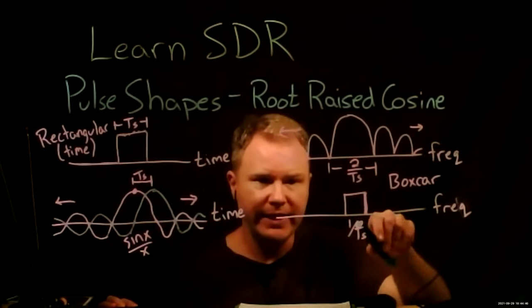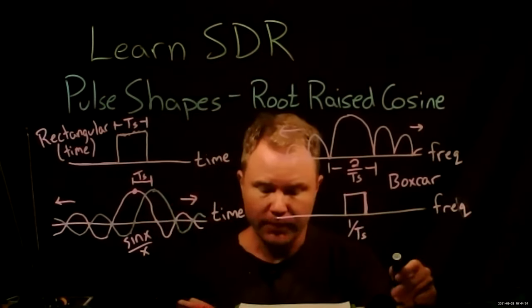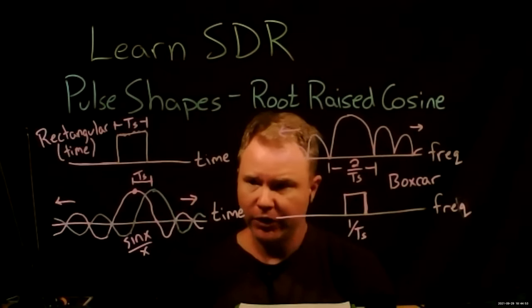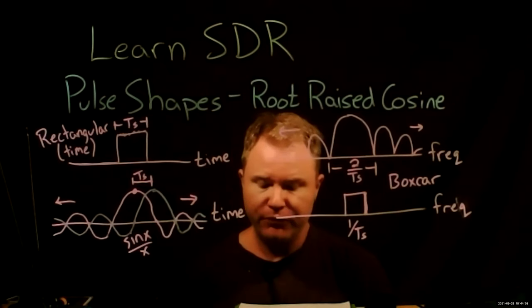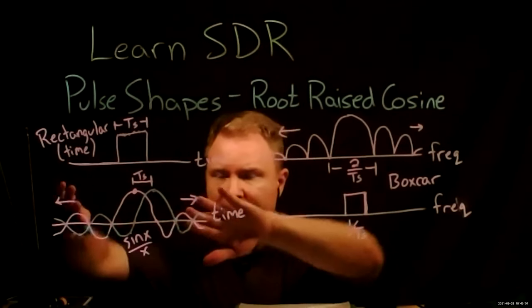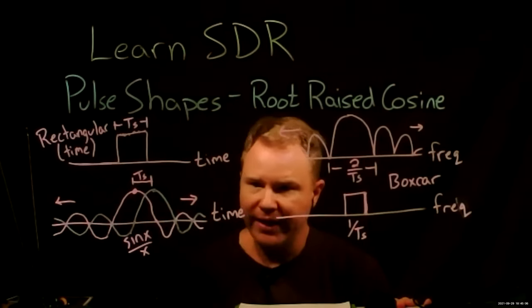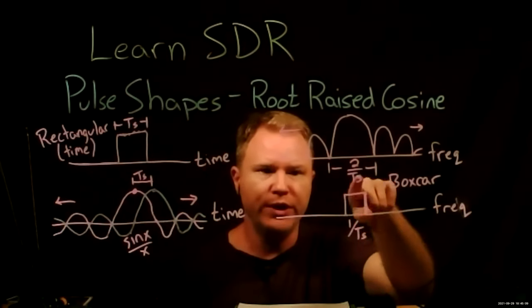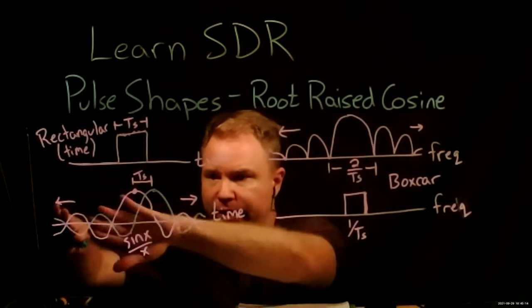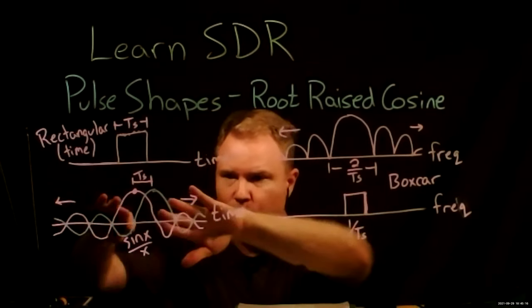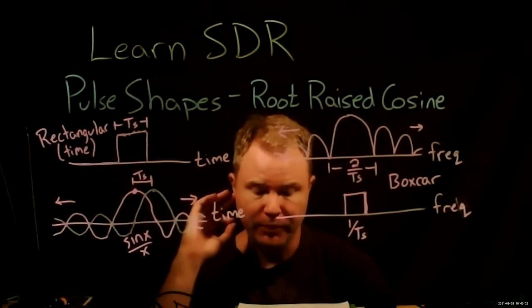This is theoretically possible — fitting all the data in the theoretically minimal bandwidth. But there are a couple of problems. The sinc falls off very slowly, and in any real system we'd want to truncate these pulses in time. Whenever you truncate them, you ruin the nice clean frequency spectrum. Unless you keep track of every data bit way before and after you want to transmit it, we need some sort of compromise.